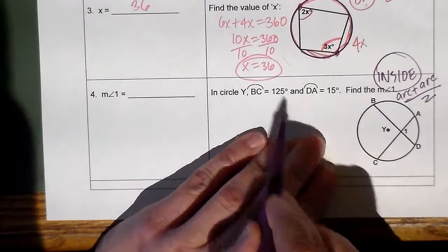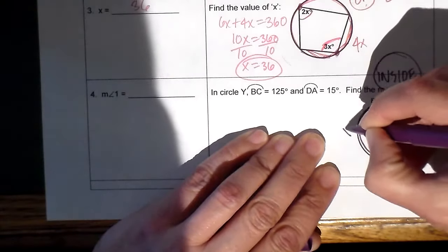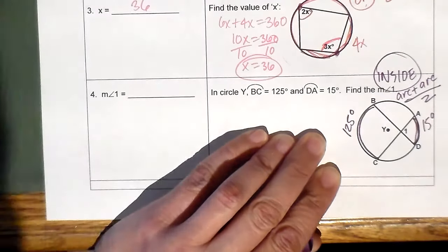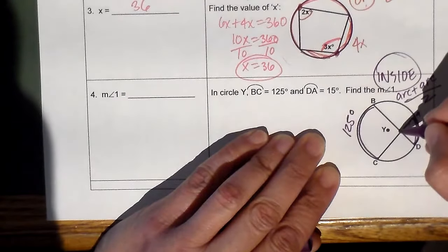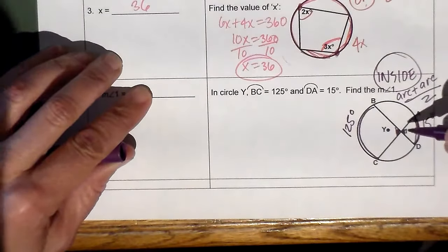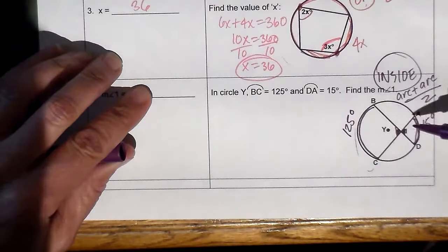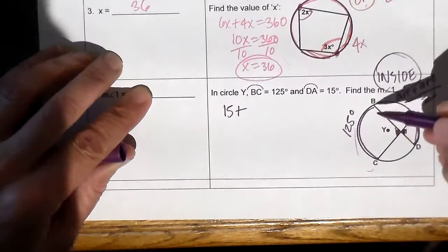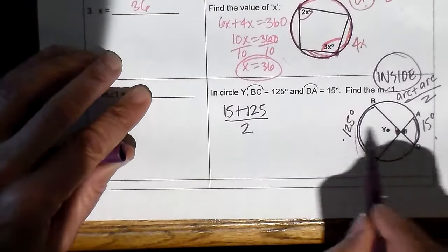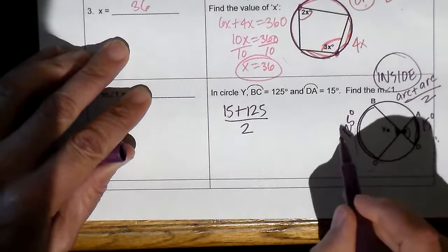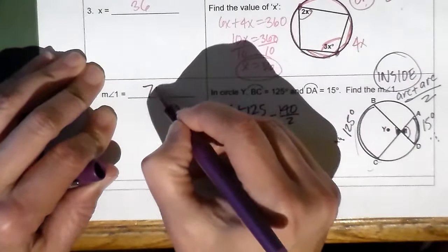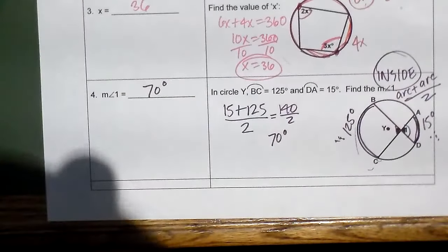Let's move to the next example. We have arcs and angles, and this angle is inside the circle — not in the center. The rule is: arc plus arc divided by 2. On the circle: one half the arc. Inside the circle: arc plus arc divided by 2. We know BC is 125 degrees and DA is 15 degrees. The question is: what is the measure of angle 1? This also equals the vertical angle.